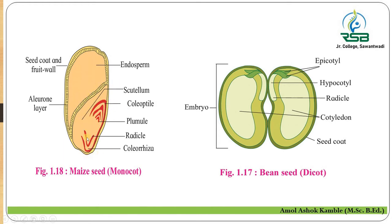After germination of the seed — whether monocot or dicot — upon attaining favorable conditions like water, moisture, and favorable temperature, the embryonal axis develops. The plumule gives rise to the shoot system and the radicle gives rise to the root system, and from these parts the development of the new plant takes place.